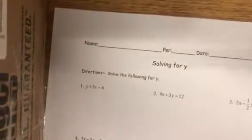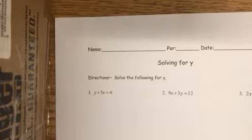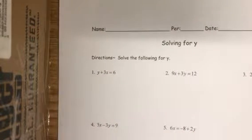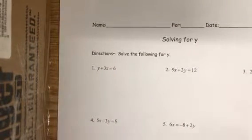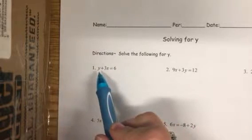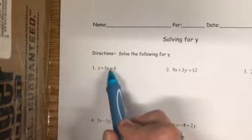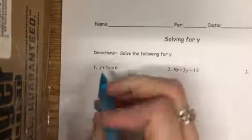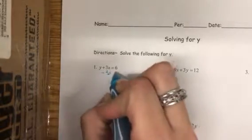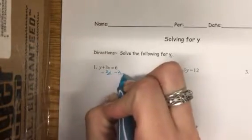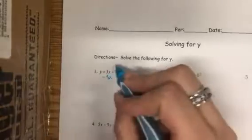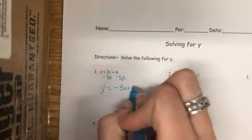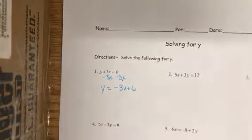Here is our answer key for solving for y — we have several different types on here. For number one, if we want to get y by itself, the only thing sitting with it is the 3x, so we're going to undo adding 3x by subtracting 3x. These cannot be combined, so we'll get y equals negative 3x plus 6.